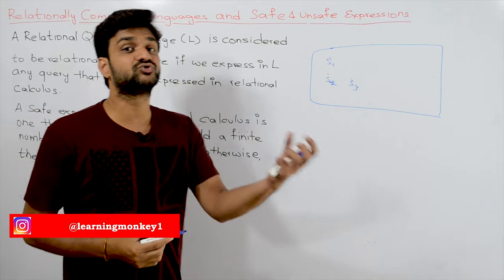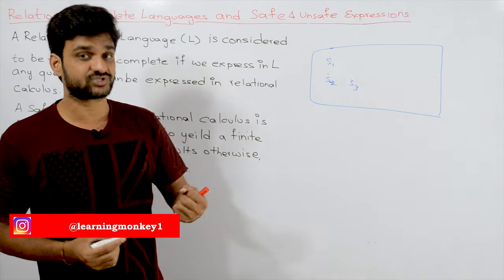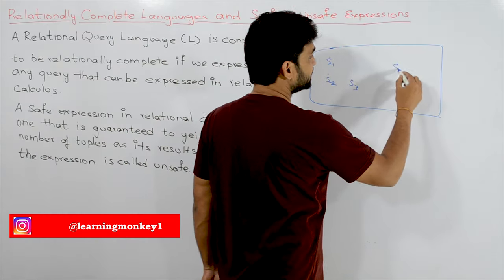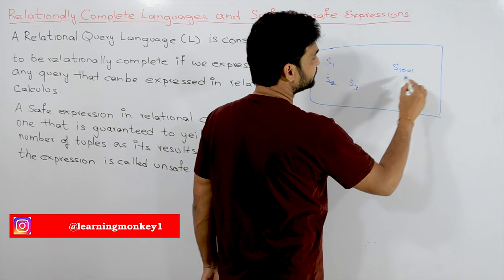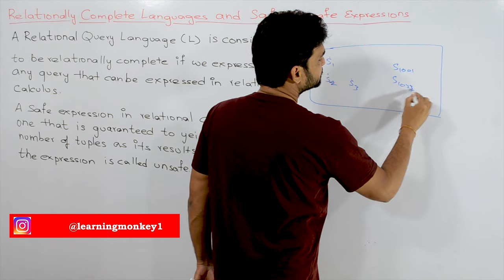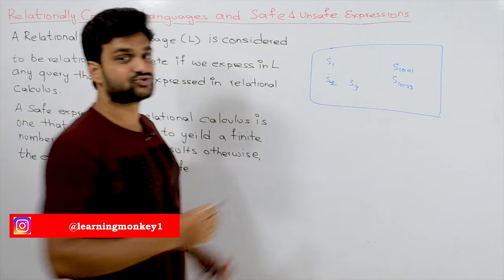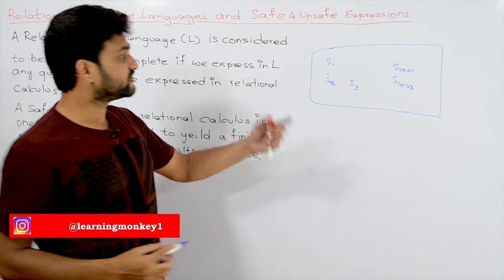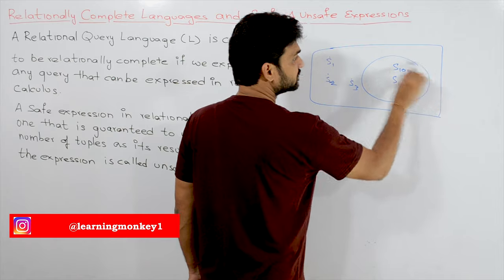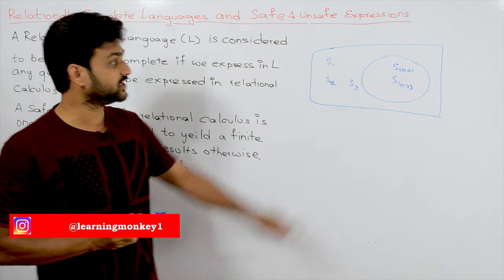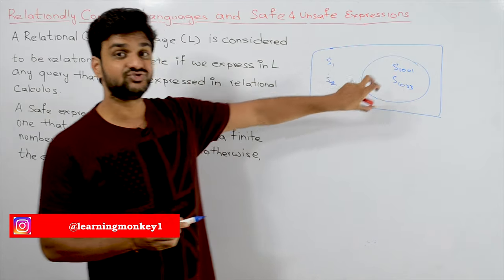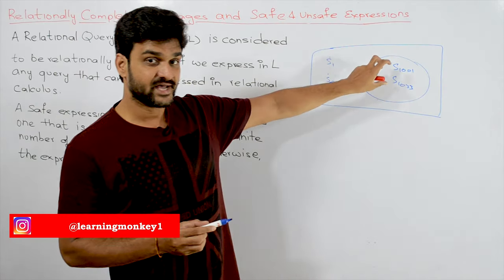From the entire universe of students, we are going to collect only some aspects of the students. So from the universe of student data, we are going to collect only a few aspects into our database. This is what we call the universe of discourse.